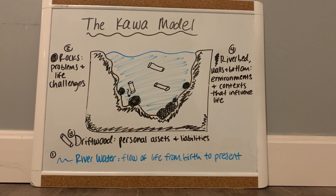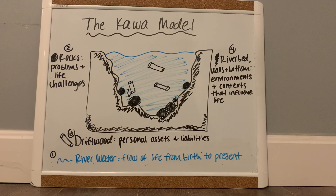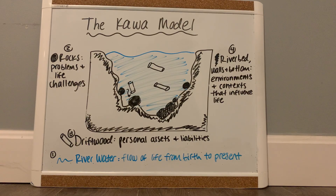The first element of the model is water. The water of the river represents the client's life flow and their health status. This starts from birth, or the river's source, until death, when the river empties into the ocean. In OT practice we look at the client's birth until present day, usually when the client is being evaluated.